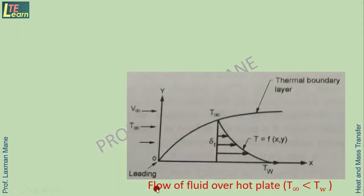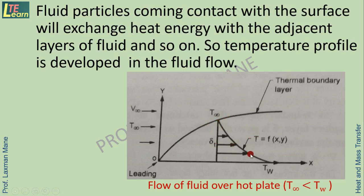When fluid flows over a hot plate, the wall temperature Tw is higher than T∞. Moving upward from the surface, temperature decreases toward the free stream value at the edge of the thermal boundary layer. Fluid particles in contact with the surface exchange heat energy with adjacent layers, so the temperature of each successive layer is less than Tw. This temperature profile in the fluid is a function of x (distance from leading edge) and y (normal direction).